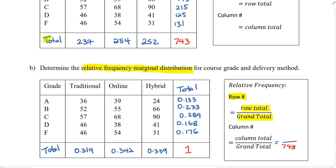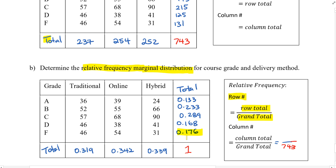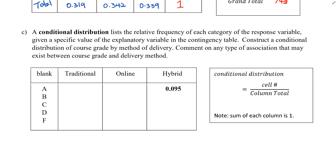Similarly, the column totals in the row also sum to 1, representing the 743 students as a whole. To interpret one value: 0.176 means that in this study, out of 743 students, the proportion of students who received an F across all three classes is 0.176. That's the relative frequency marginal distribution.